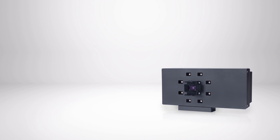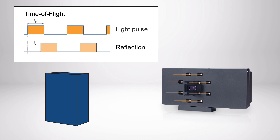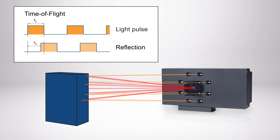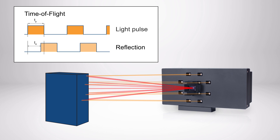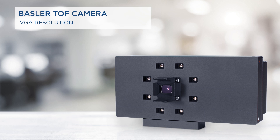The camera measures distances by the time it takes for a light pulse to travel from the built-in light source to the object and then back after being reflected off of the object. By shuttering the sensor in a smart way, the distance can be calculated very easily without complex formulas and computing power. The Basler TOF camera offers VGA resolution and delivers up to 20 frames per second.